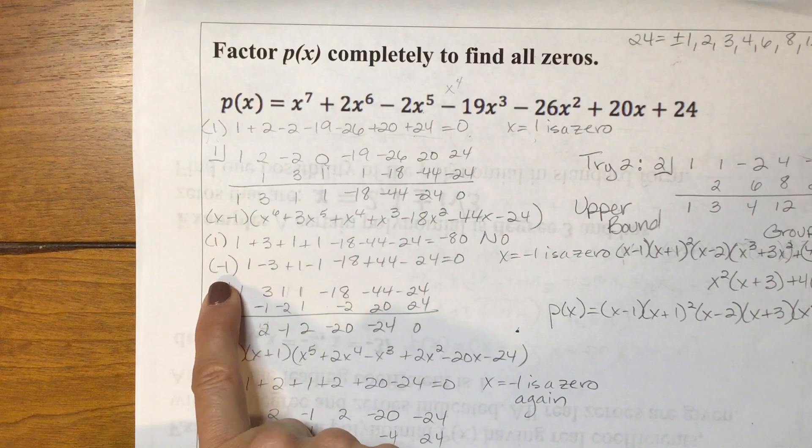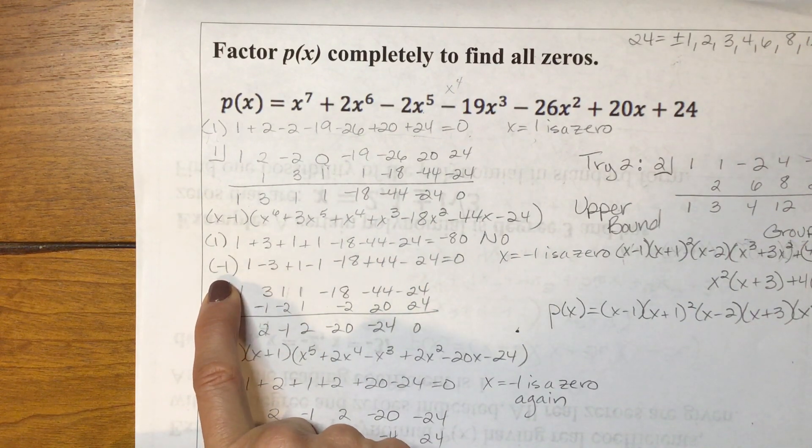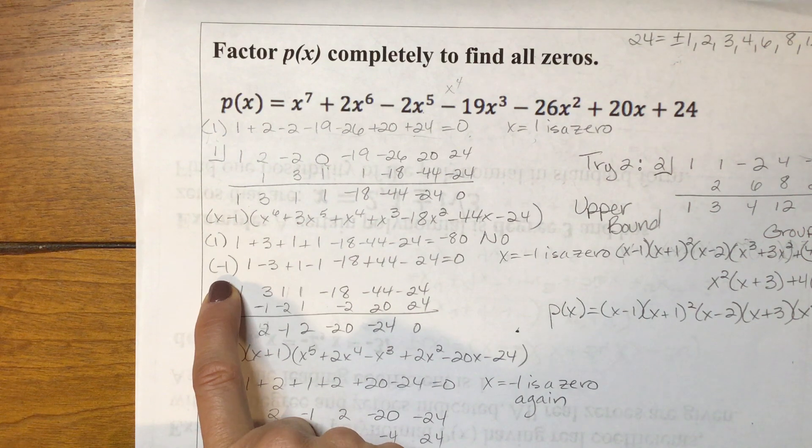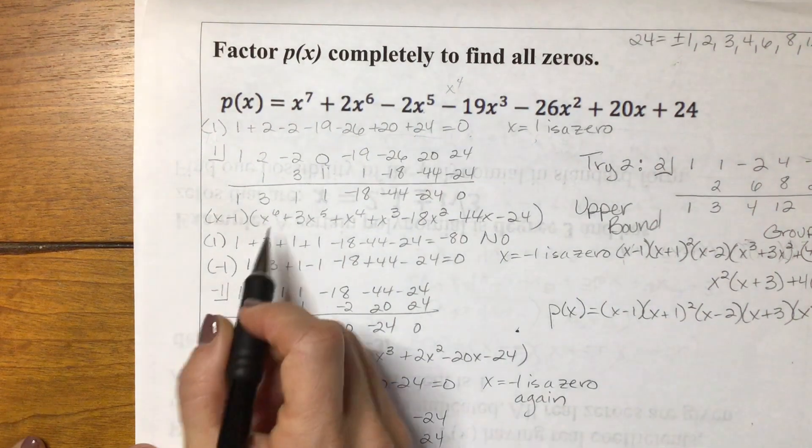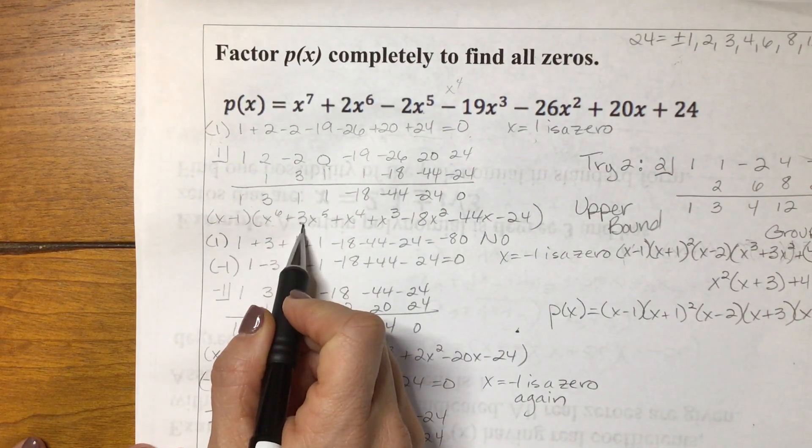So then I tried negative 1. And remember, negative 1 is I add up all the coefficients, but I make the odd coefficients the opposite sign of what they were. And so that would make this a negative, this a negative, and this a positive.